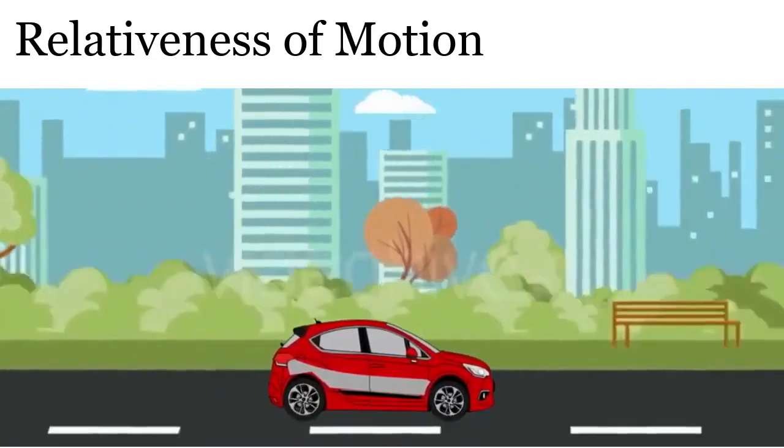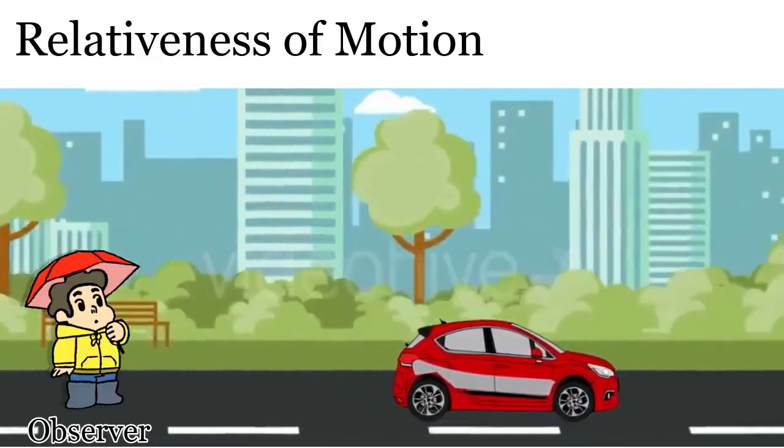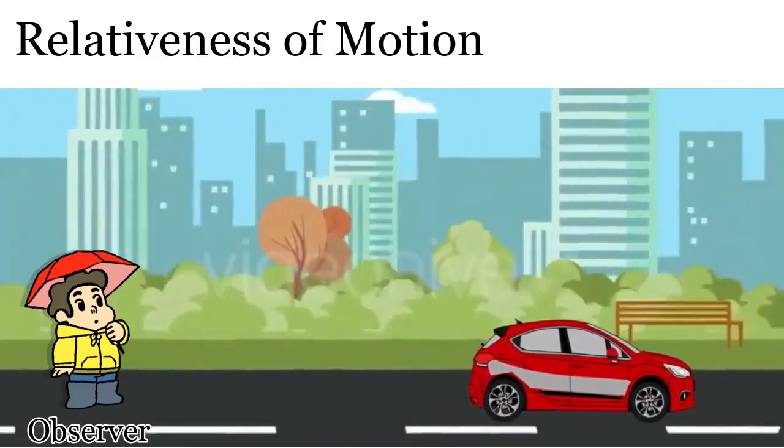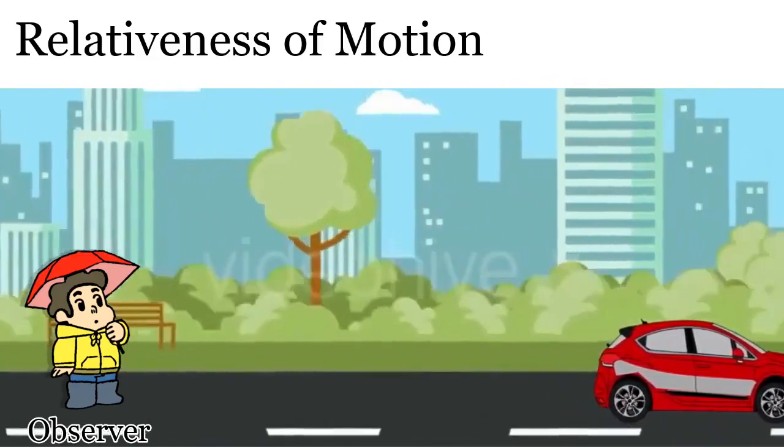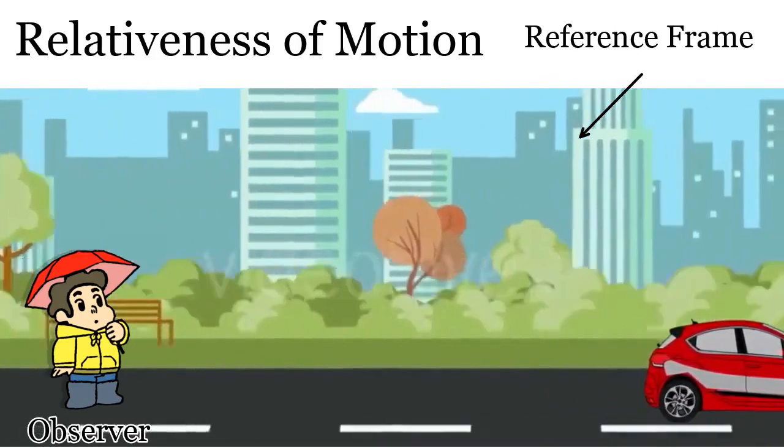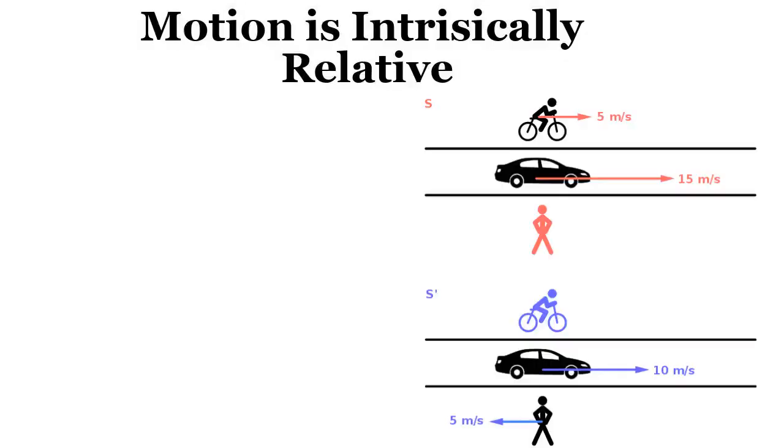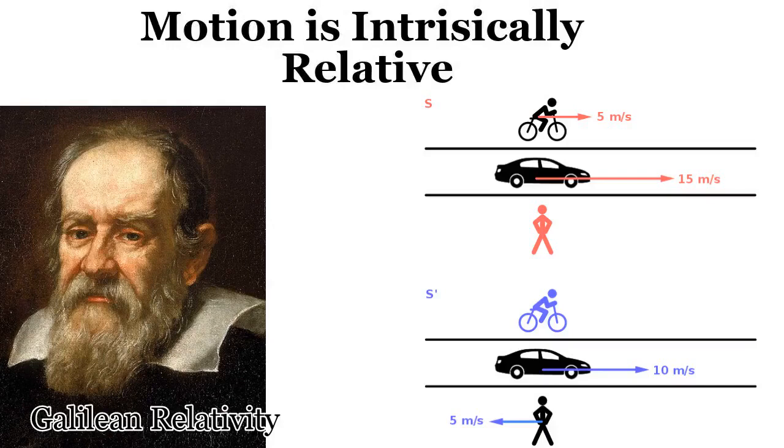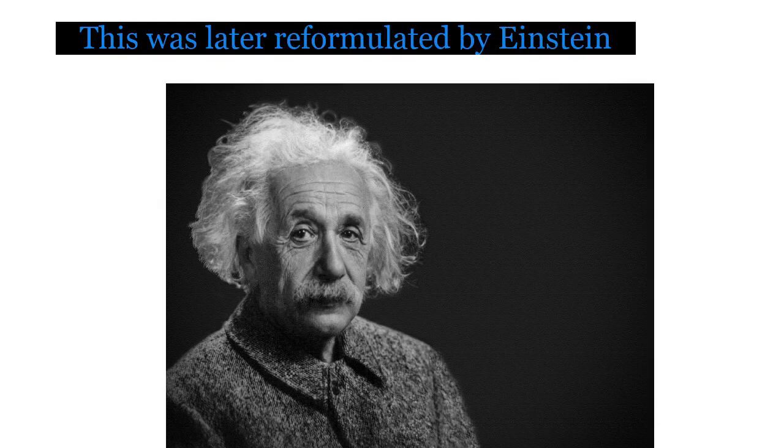But with what respect are we stating these facts? Normally, a statement about motion is given by an observer with respect to himself. This frame with respect to which the statements of motion are made are called reference frames. Thus, motion has an intrinsic relative nature. This relative nature was first recognized by Galileo and was known as Galilean theory of relativity. This was later modified by Einstein in his special theory of relativity.